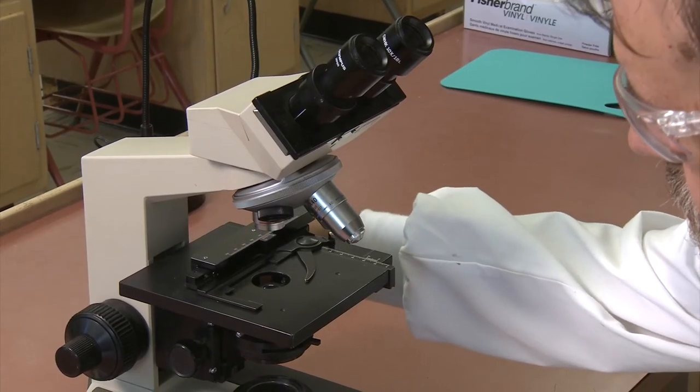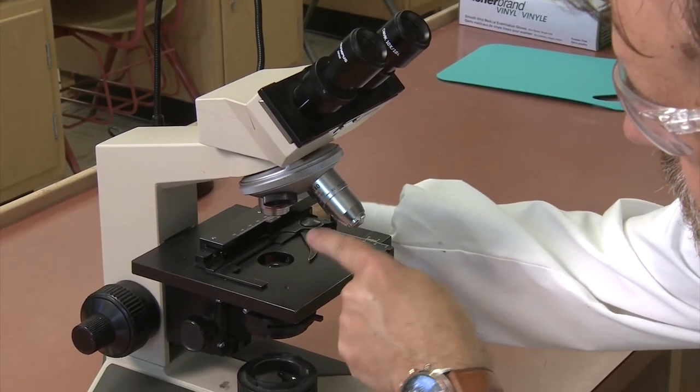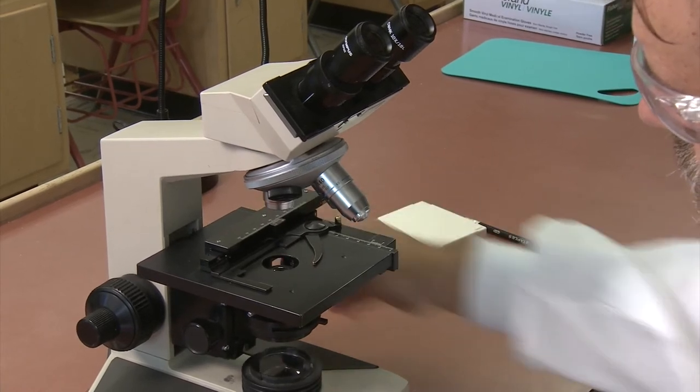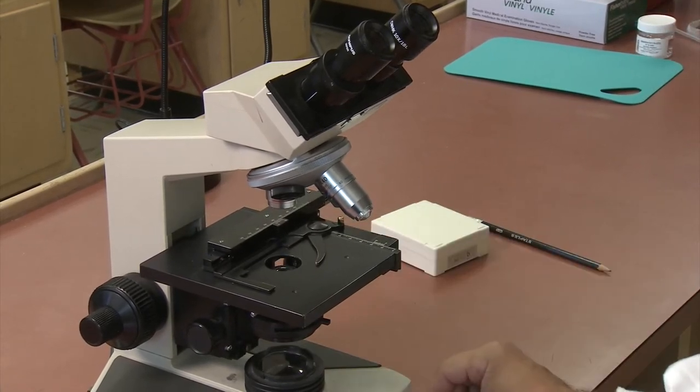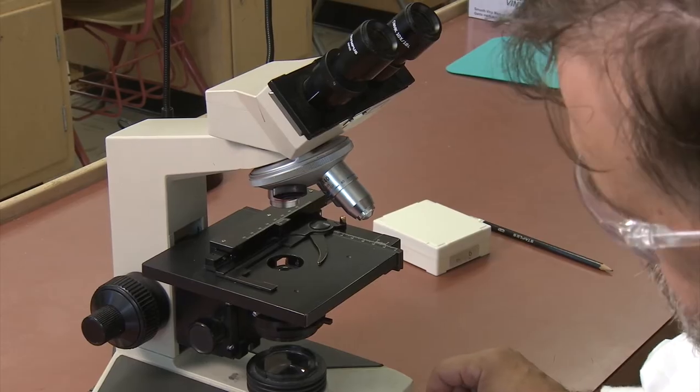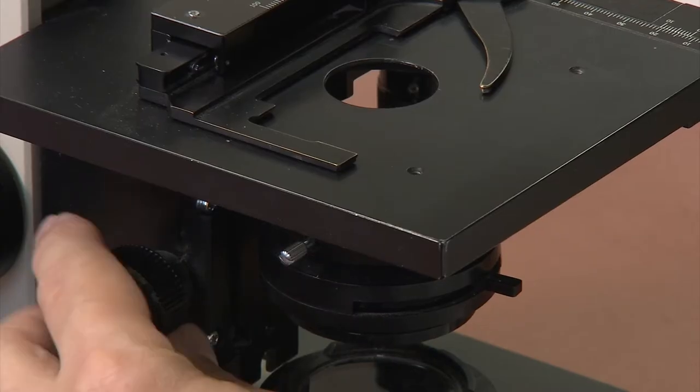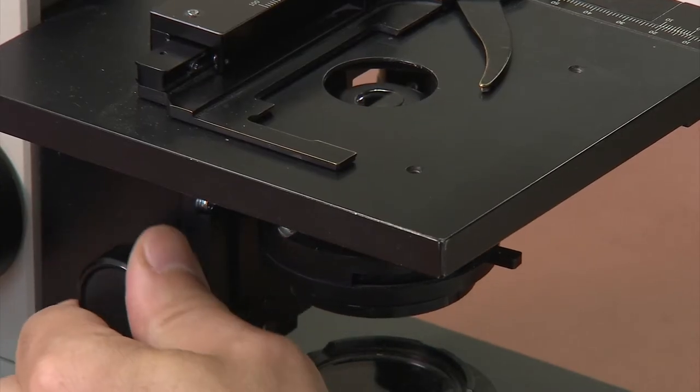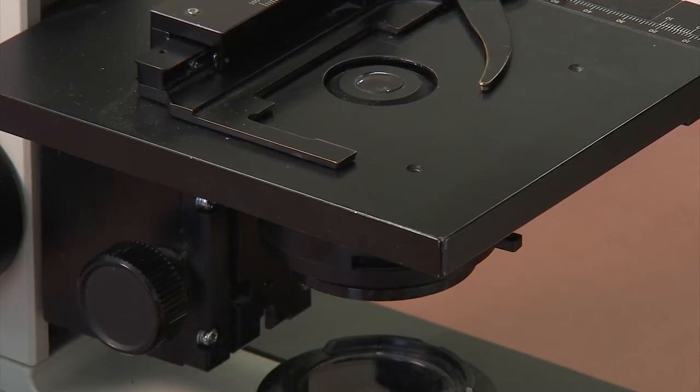Using the coarse focus knob, lower the stage until it is at least four centimeters below the 4x objective lens. Raise the condenser as high as it will go using the condenser adjustment knob. You will see the condenser lens protrude slightly through the hole in the center of the stage.